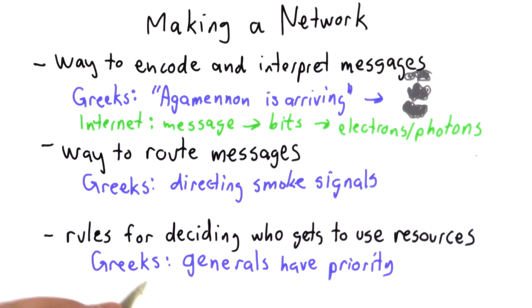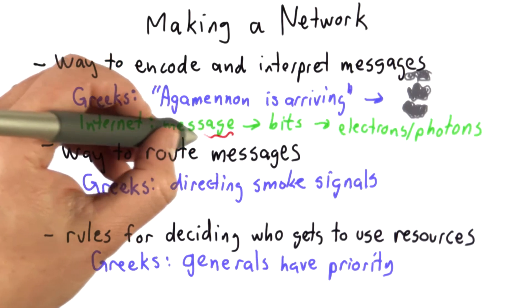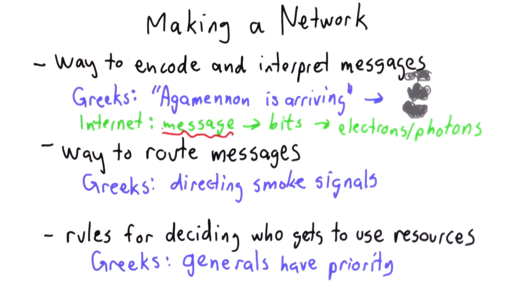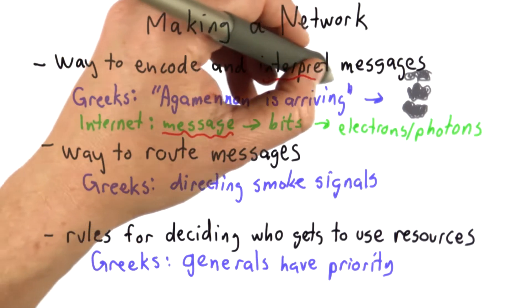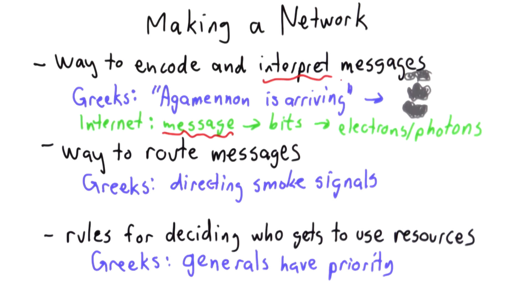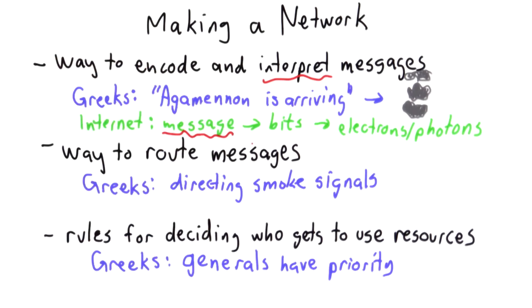What we haven't talked about, which we are going to talk about soon, is what these high-level messages are. We need ways to send messages that can be interpreted and understood at the other side. So what we'll talk about next is how that works on the Internet.